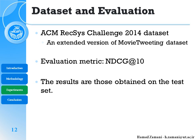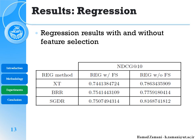For evaluation we use the ACM RecSys Challenge 2014 dataset, which is an extended version of the Movie Tweeting dataset, and the evaluation metric is NDCG@10. Results are obtained on the test set. Looking at the regression results with and without feature selection, we can see that results without feature selection are much higher than after feature selection — meaning feature selection does not help the regression models.